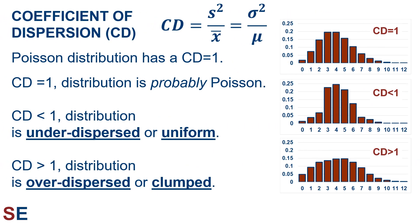The coefficient of dispersion equals the variance divided by the mean, and a Poisson distribution would have a coefficient of dispersion of one. The top figure shows a Poisson distribution with a coefficient of dispersion equal to one. If the variance is less than the mean, the coefficient of dispersion is less than one, and we term the distribution under-dispersed or uniform. We see more samples with a number of observations closer to the mean than expected, and fewer samples with numbers far from the mean. The numbers of successes are more consistent and similar to each other, as shown in the middle figure, where most samples have three, four, or five observations, and very few have two or less, or seven or more.